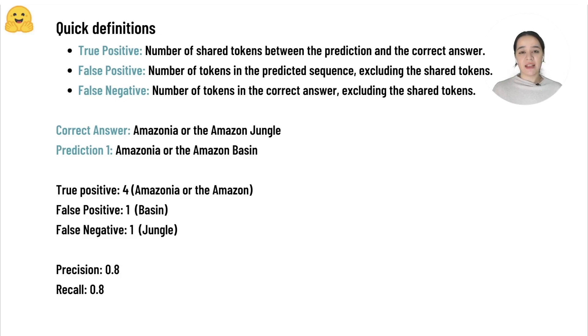F1 score is calculated over the average of two metrics called precision and recall, which are metrics that are used widely in classification problems.